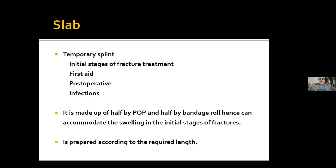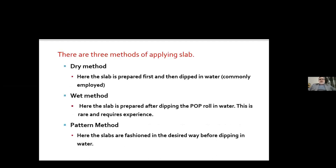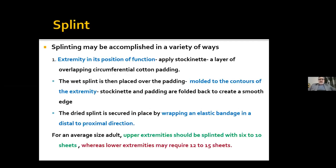Three methods of applying slab: dry method — slab is prepared first and then dipped in water, the most commonly used method. Wet method — the POP roll is made wet first, then the slab is prepared; this is rare and requires experience. Pattern method — slabs are fashioned in the desired way before dipping in water. There are many ways splinting can be accomplished, and I am going to show you a video of how to apply a proper slab.